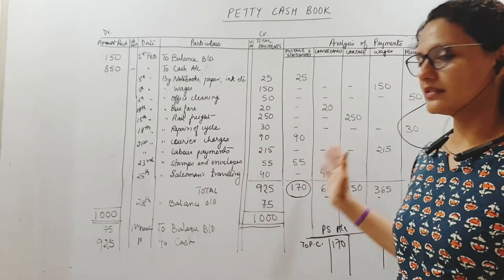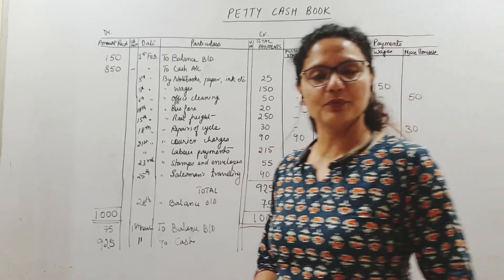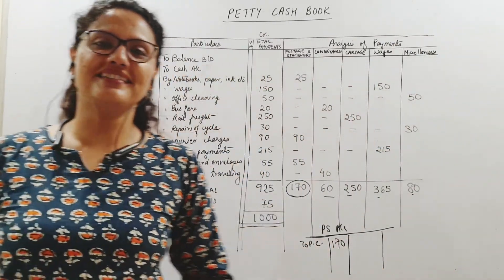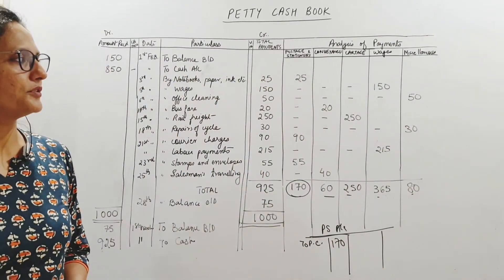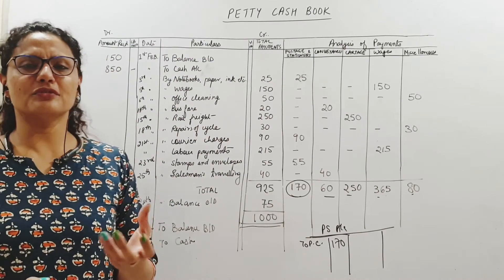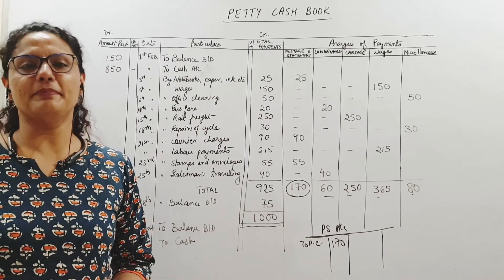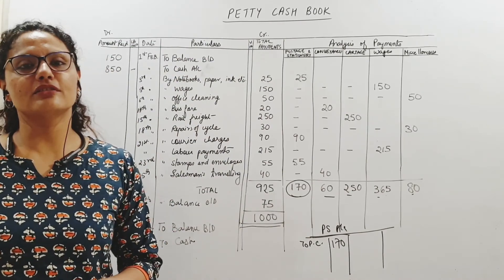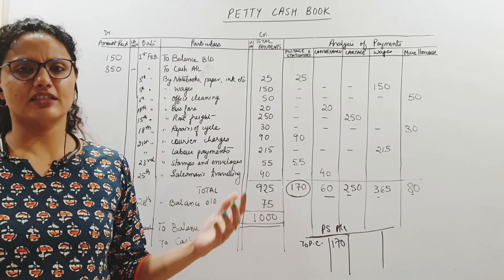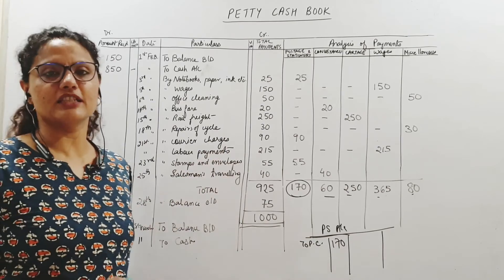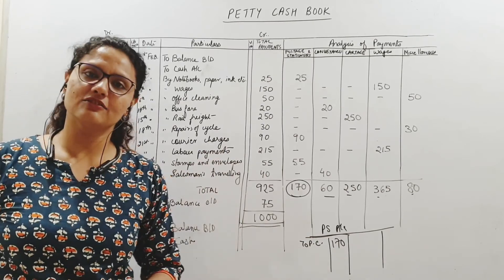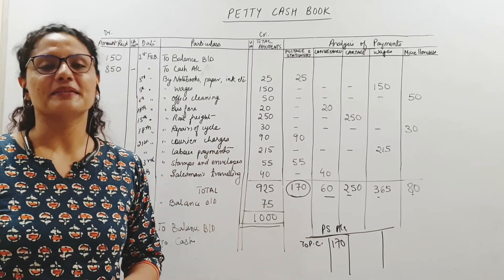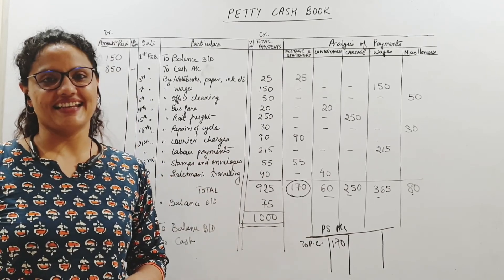So this is the petty cash book — I hope you found it very simple. Practice just 2 to 3 sums and it will be done. Do not take too much time to complete this chapter. See you soon. Bye-bye, take care.